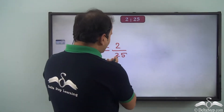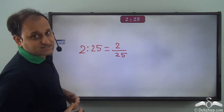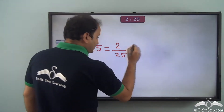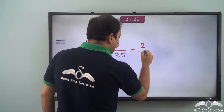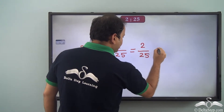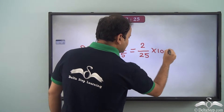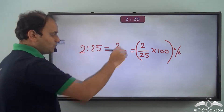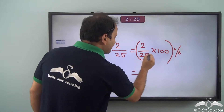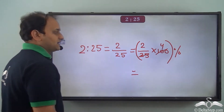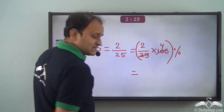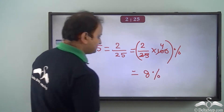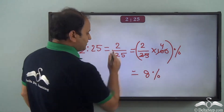Now if we want to convert this particular value into percentage, we'll have to multiply this value with 100. So we can write it as 2 by 25 into 100, and we'll have to place a percent symbol beside it. Now 25 into 4 is 100 and 2 into 4 is 8, so the answer is 8 percent, and this is how we solve ratios.